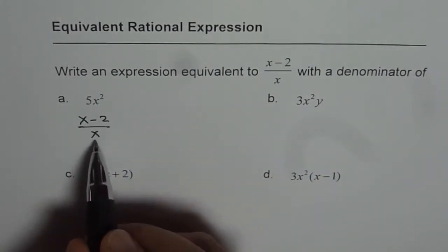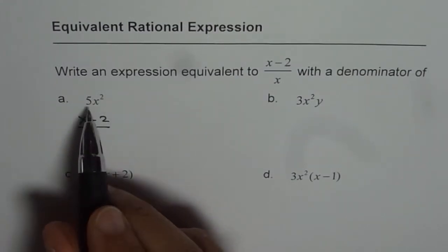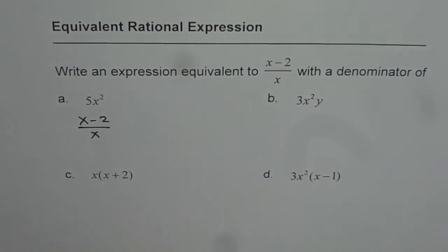But we have a denominator of only x. How can I make an equivalent expression with a denominator of 5x squared? That is the question to be answered.